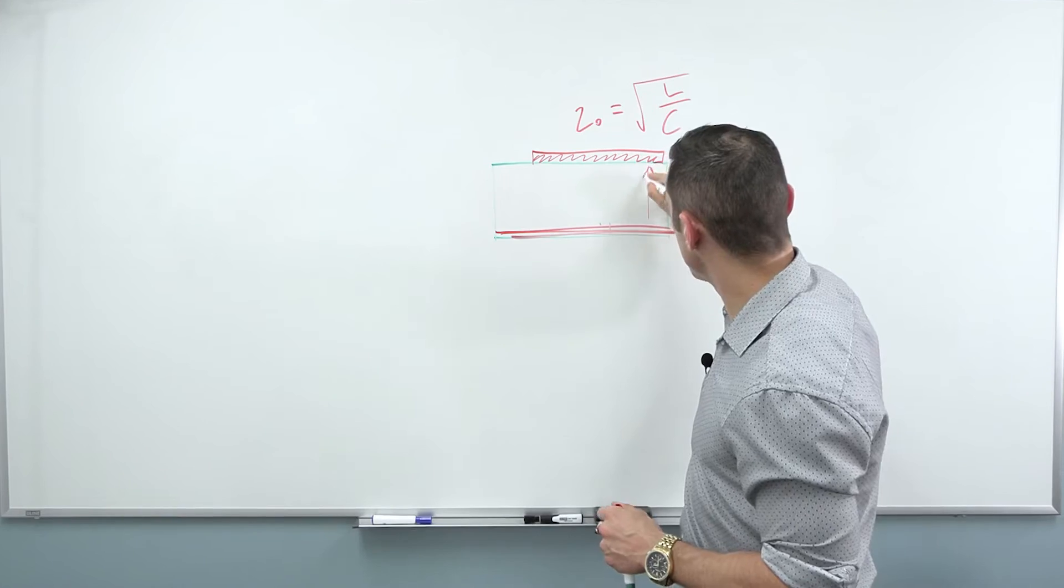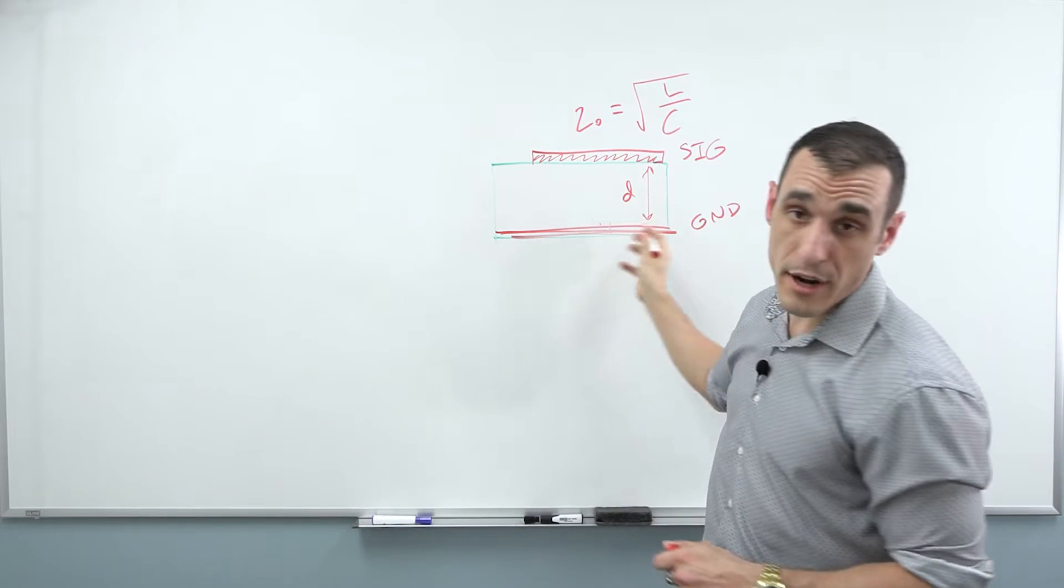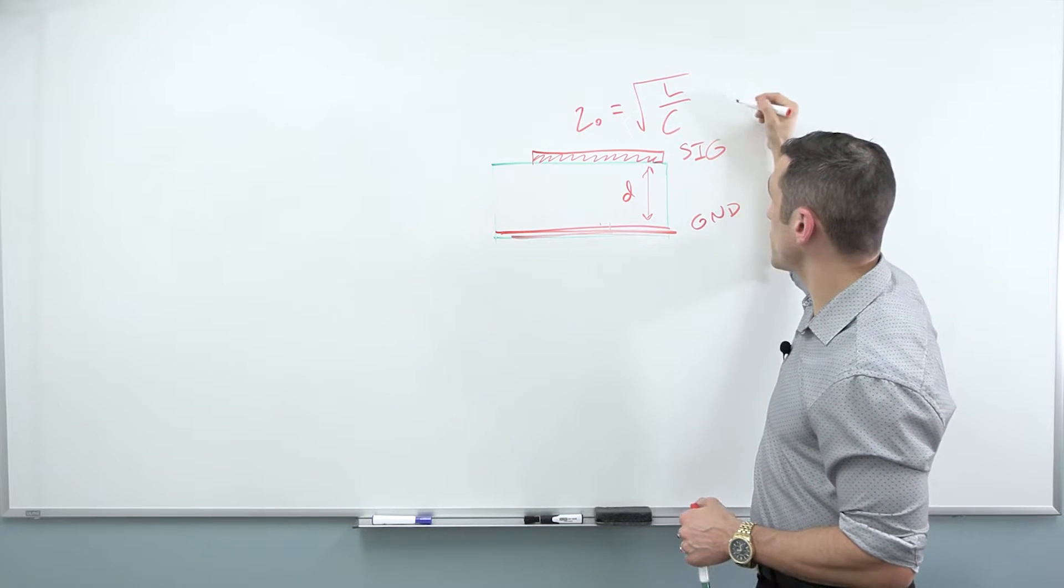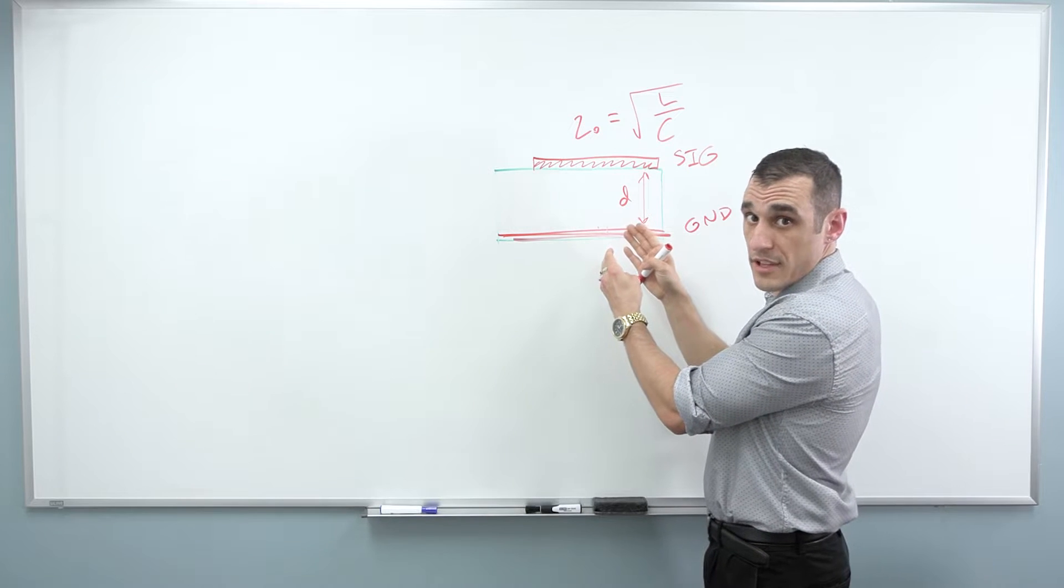Remember, this distance between my signal and my ground plane, D, that's going to determine both the capacitance per unit length and the inductance per unit length. What happens when I have a really big value for D?